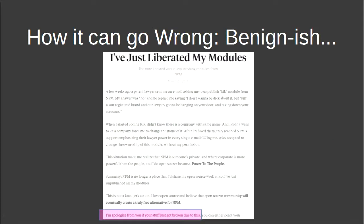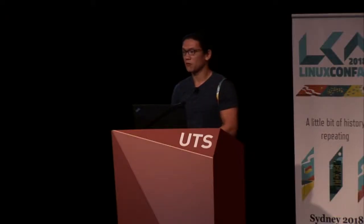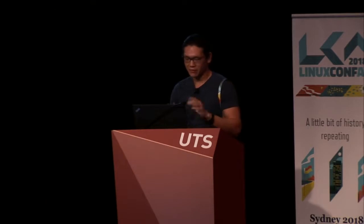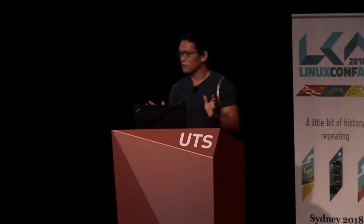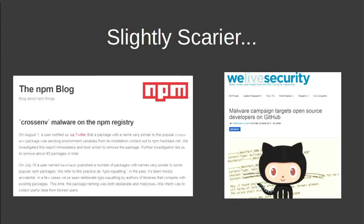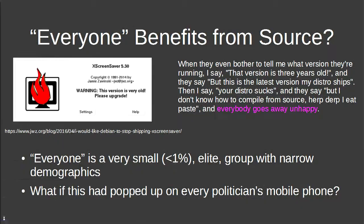There are some benign examples of how open source can go wrong. For instance, a developer unpublished a bunch of npm modules one evening, breaking many people's builds. It can get scarier: people have been putting typo-squatting malware in npm packages, and targeting GitHub developers to steal their keys and poison open source repositories.